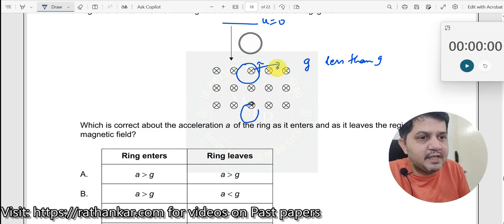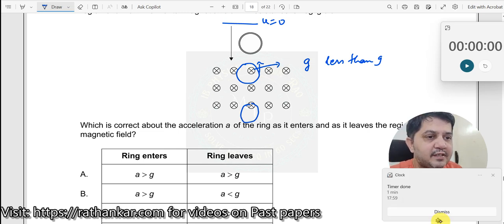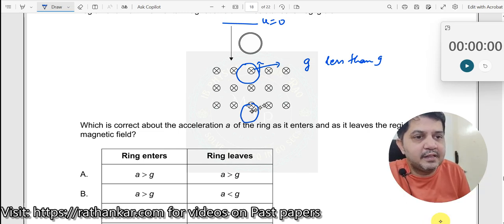But the moment it is leaving out from here, the ring hates the change of magnetic flux. As a result, the magnetic flux is now reducing as it goes and hence it will now try to pull it upwards over here. The induced EMF will now try to pull it upwards.